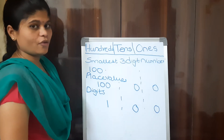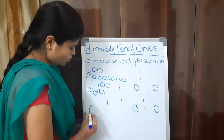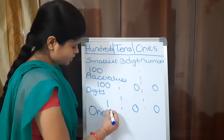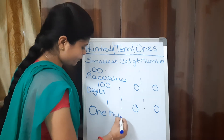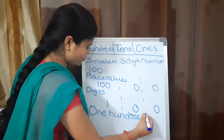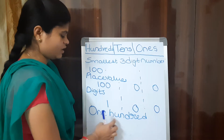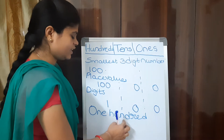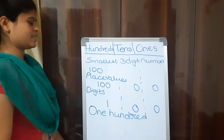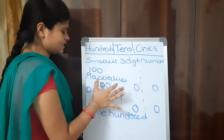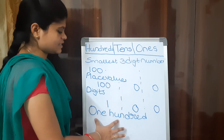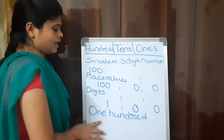What is the number name of 100? It is spelled O-N-E H-U-N-D-R-E-D — one hundred. This is how we represent the smallest three-digit number in place value and in digits, and this is the number name of one hundred.